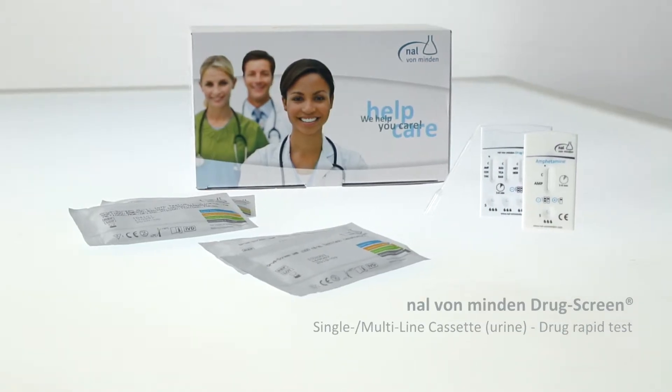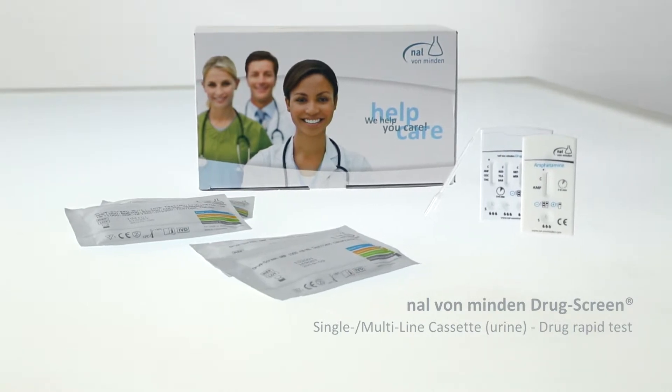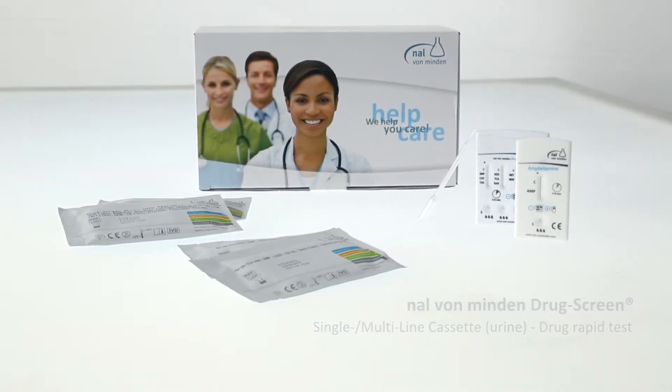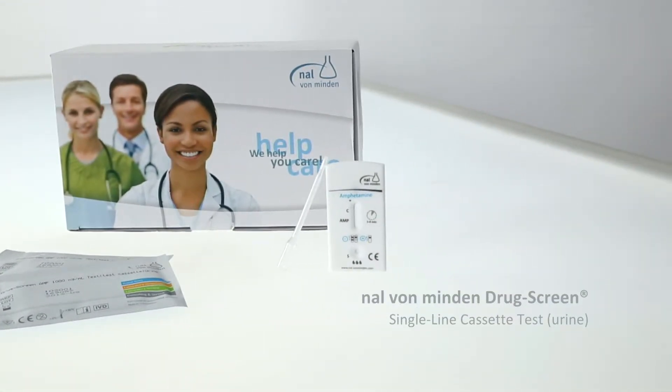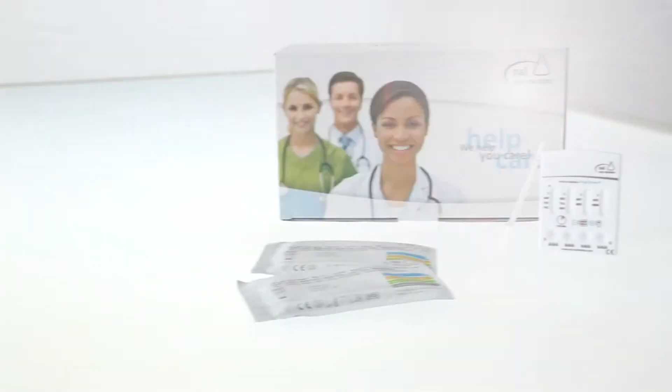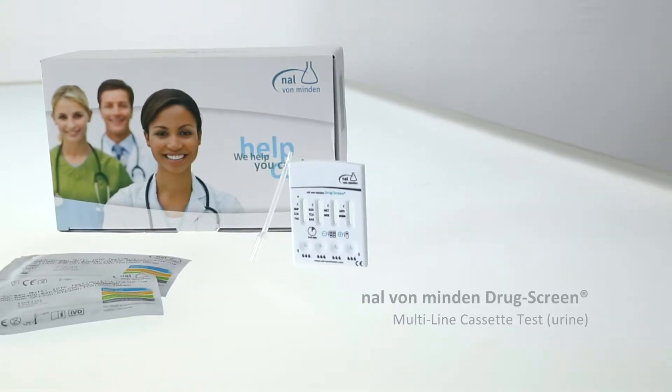The Nal von Minden drug screen rapid tests detect various drugs and drug metabolites in human urine. They can be used as single tests or integrated into multi-test combinations.